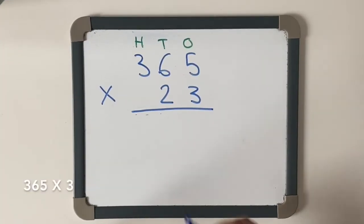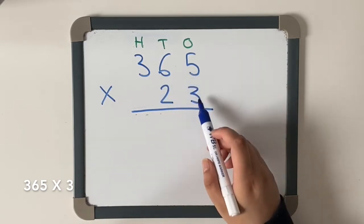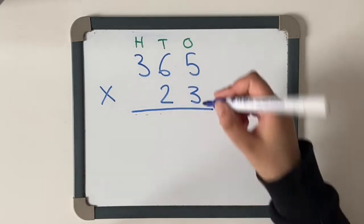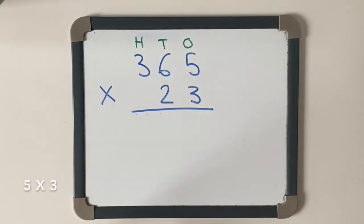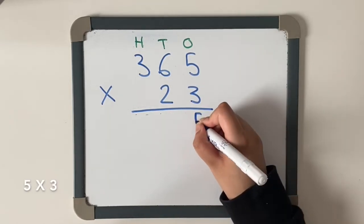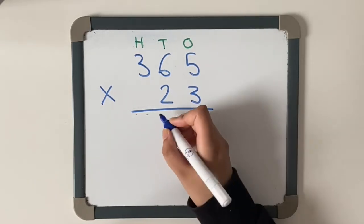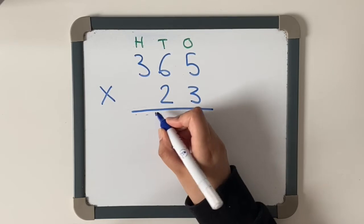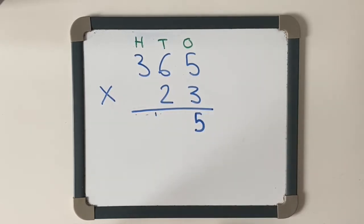First, we're going to do 365 multiplied by 3, so we're going to focus on our ones first. Five times three is 15. I'm going to put the five there and carry the one across, doing it small but you can still see it.